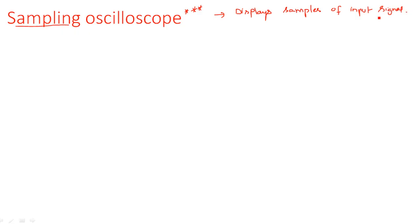In the previous case we looked at dual beam and dual trace oscilloscopes, which directly display the entire signal. But here, in the sampling oscilloscope, only samples of the signal are displayed. Let us see the block diagram and how samples are selected.